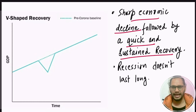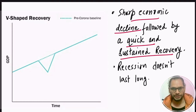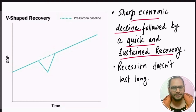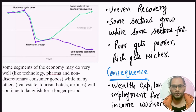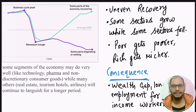In V-shape recovery, every sector of the economy grows. During the time of lockdown, the Indian economy went into a recession, but the government claims that this recession is over and every sector of the Indian economy is bouncing back to the previous level where it was before the pandemic. But experts are saying that Indian recovery is not V-shape — it is K-shape recovery.